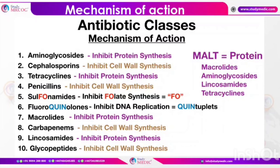The next group, cephalosporins, have different generations. Their main mechanism of action is inhibiting cell wall synthesis, and they have cross-sensitivity reactions with penicillin. When penicillin allergy is present, not all cases allow cephalosporin as a drug of choice — especially in severe penicillin allergy. Commonly used cephalosporins include ceftriaxone, cefpodoxime, cefotaxime, and others.